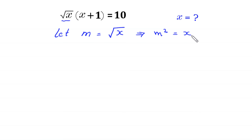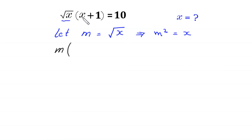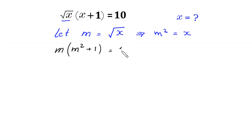Now we substitute m and m squared in this equation. Then this equation becomes: in place of this square root of x we write m, times, in place of this x we write m squared, m squared plus 1 is equal to 10.